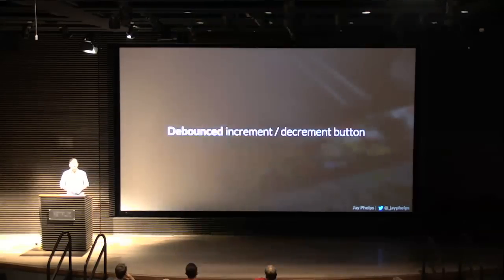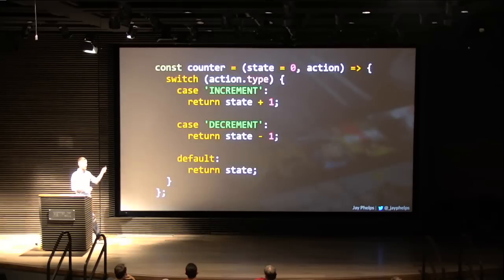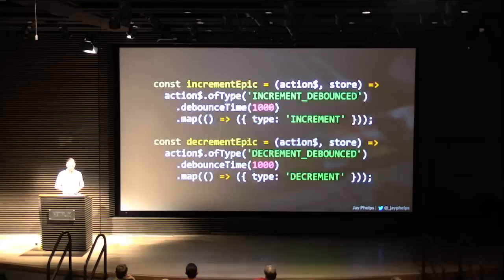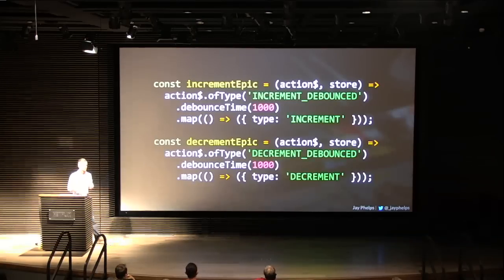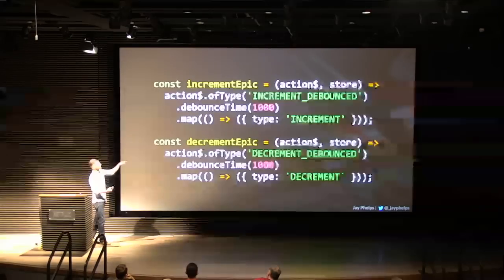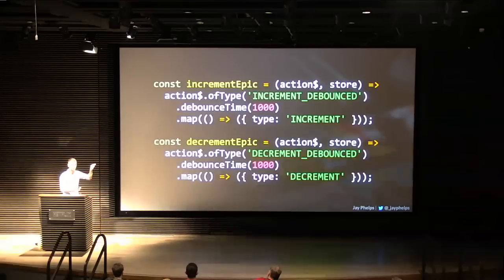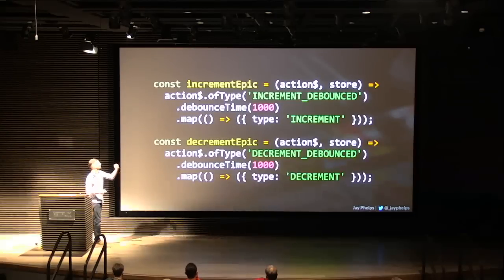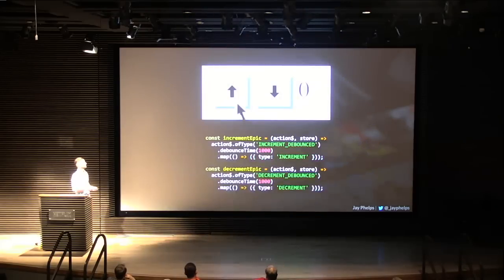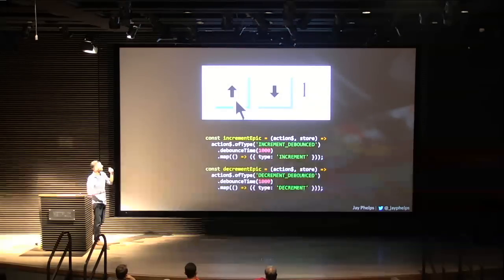Let's look at another example: debouncing an increment and decrement button. We've got that basic counter reducer. Instead of having your application emit the increment action directly, it dispatches increment debounced. Your epics listen for that, use the RxJS operator debounceTime to debounce by one second, and then dispatch the actual increment action. Same thing with decrement — decrement debounced, wait a second, then decrement. In the app, you click the button, it waits a second, then updates.